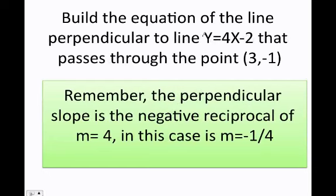Build the equation of the line perpendicular to the line y equals 4x minus 2 that passes through the point 3 comma negative 1. The same problem, but now my equation is going to be perpendicular. Remember, parallel lines have the same slope, so they might look like this. Perpendicular lines, they don't. If one looks like this, the other one looks like that. If one looks like this, the other one has to be perpendicular, and they will have a 90 degree angle between them.